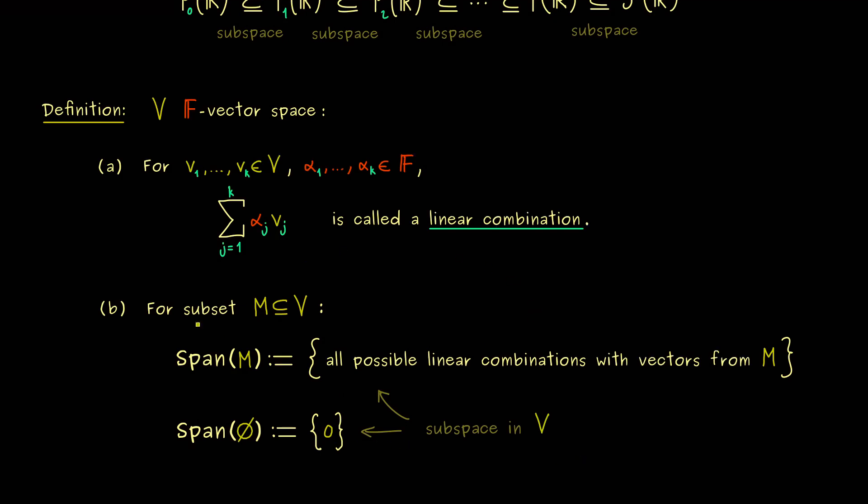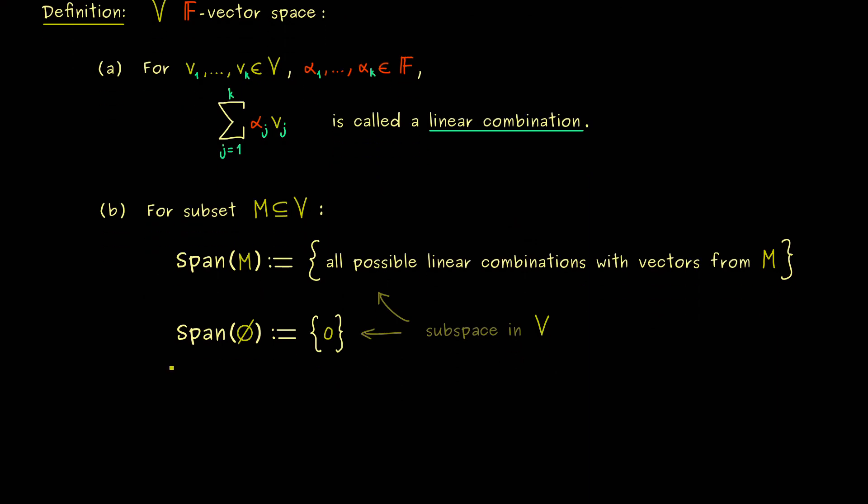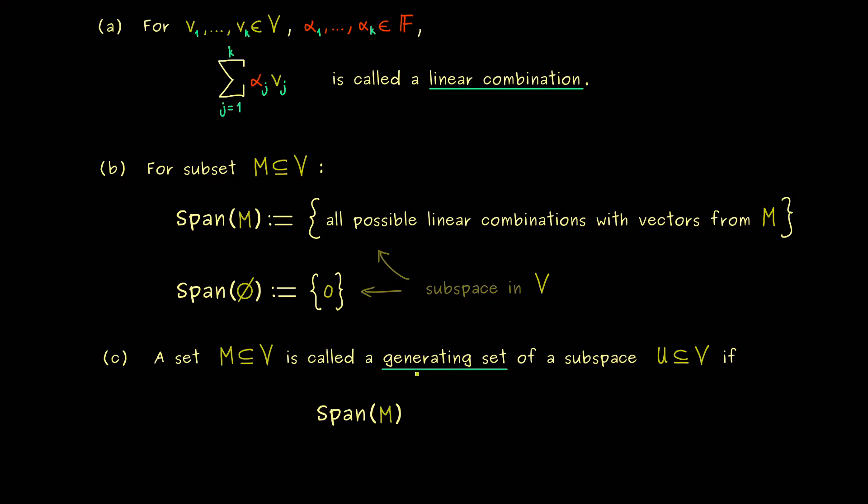In other words this is now how we can span abstract subspaces in our vector space. And related to that will be the next notion here. In fact such a set M is a generating set for a subspace if we can span this subspace with M. This makes everything simpler because instead of the subspace U we can just write down the generating set M.